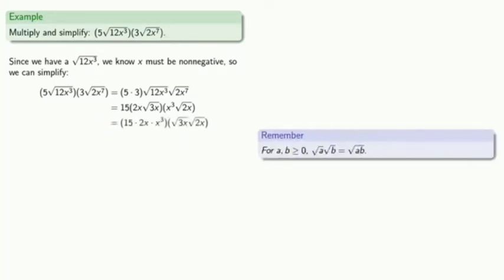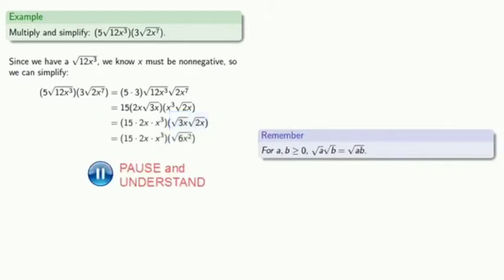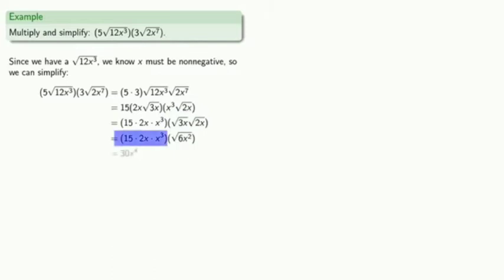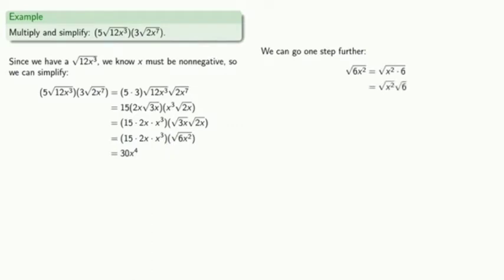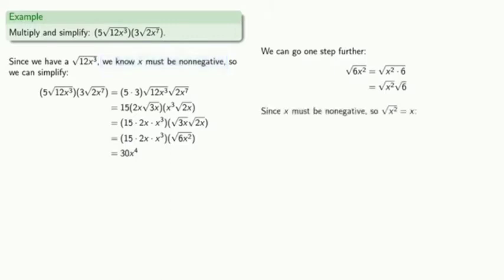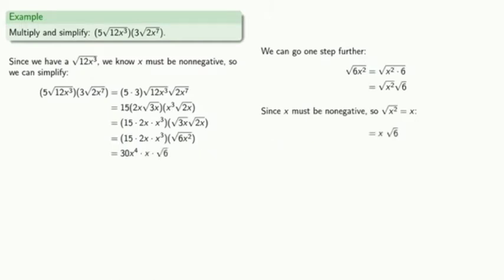We'll rearrange our factors so all of the coefficients are multiplied together and our square roots will be multiplied together. The product of square roots is the square root of the product. We'll multiply our coefficients together, and we can go one step further — the square root of 6x squared is a perfect square, and since x must be non-negative, the square root of x squared is just x. Finally, we multiply the factors outside the radical together to get our simplified answer.